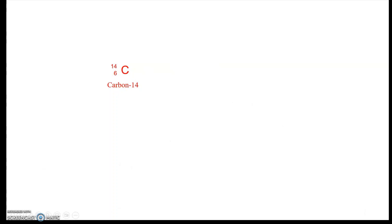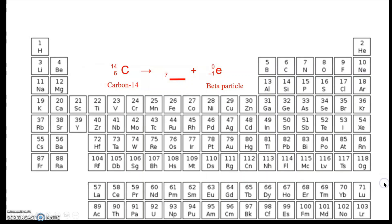Another beta emitter is carbon-14. We ask: what minus one equals six? That's seven. Element 7 is nitrogen. For the mass number: what plus zero equals 14? That's 14. So carbon-14 decays into nitrogen-14. That's another example of a beta emitter.